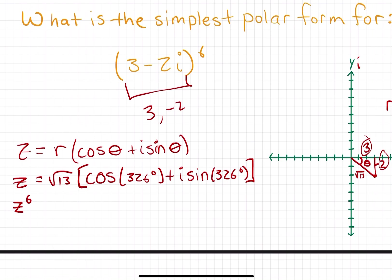Let's now raise this to the power of 6. That is going to be the square root of 13 to the power of 6, but I'm going to write this as 13 to the power of 1 half and then to the power of 6, because when you have a number with an exponent raised to another exponent, you multiply the two exponents together. So we're left with 13 to the power of 3 because 1 half times 6 equals 3.